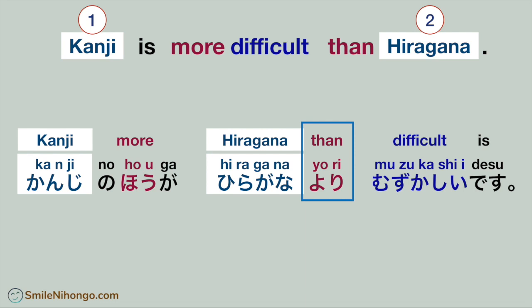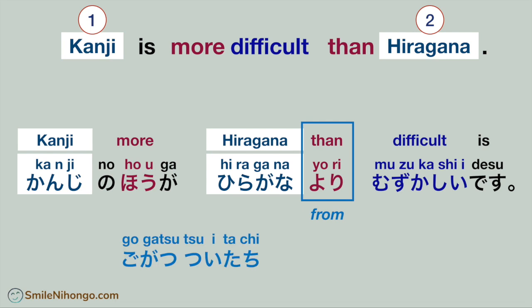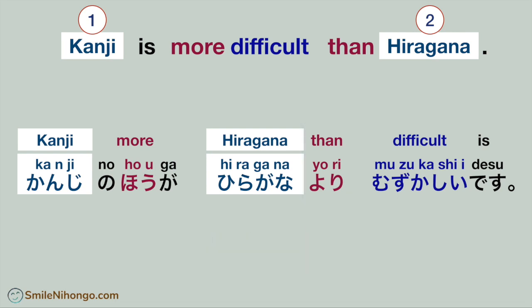And 'yori' is a two-letter particle that has a few different functions. Here it indicates the one that is less between two options, so it is the same as 'than' in English. On a side note, 'yori' can also mark a starting point meaning 'from' — for instance, 五月ついたちより means 'from May 1st.' But in this lesson, I'm going to use 'yori' for the meaning of 'than' only.